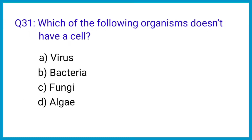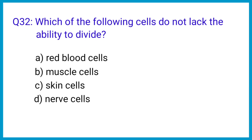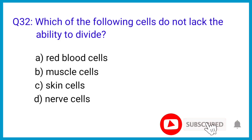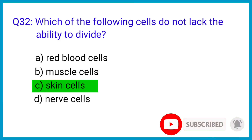Question number 31. Which of the following organisms does not have a cell? The correct answer is option A: Virus. Question number 32. Which of the following cells lack the ability to divide? The correct answer is option C: Skin cells.